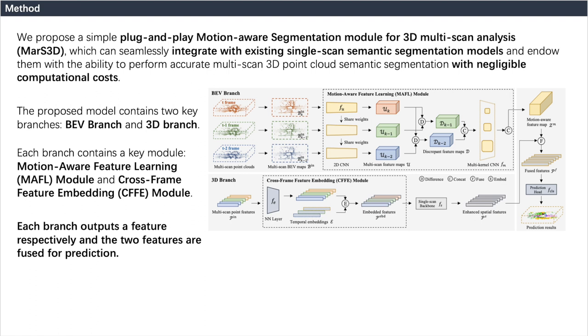As shown in the structure diagram in the slide, the proposed model contains two key branches: BEV branch and 3D branch. The BEV branch contains a key cross-frame feature embedding module. Each branch outputs a feature respectively and the two features are fused for prediction.